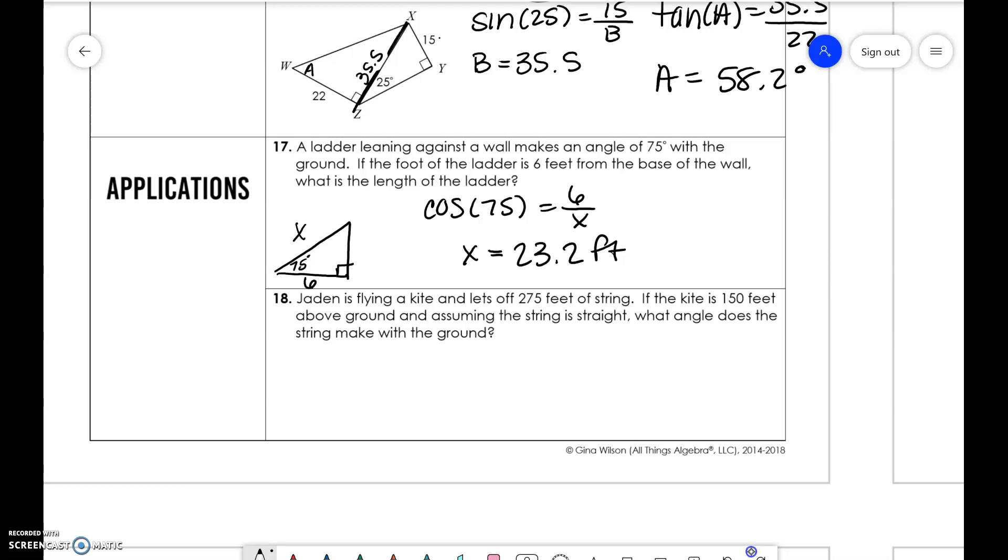Jayden is flying a kite and lets off 275 feet of string. If the kite is 150 feet from the ground, assuming the string is straight, what is the angle that it makes with the ground? So we're trying to find that value there. I should do it as X. So we would have opposite and hypotenuse. So sine of X is equal to 150 over 200. Take sine inverse and we get the angle to be 33.1 degrees. All right. So I hope that helps.